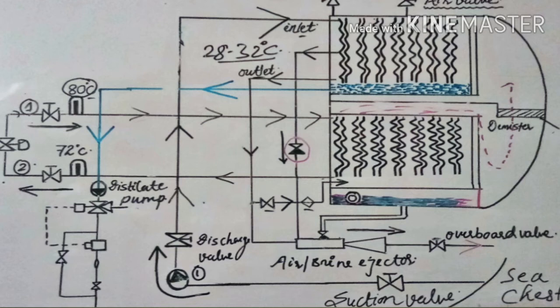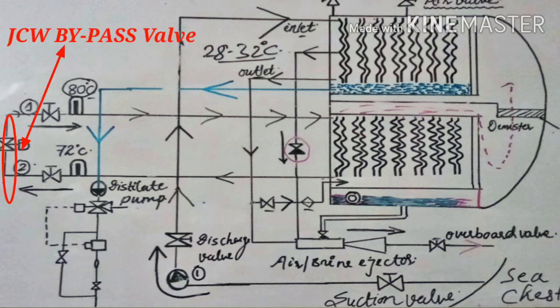Now come to the stopping procedure of fresh water generator. Before that, I would like to introduce one term: the jacket cooling water bypass valve. It regulates the plant capacity — 'plant' here refers to the fresh water generator. The amount of engine cooling water for the evaporator is adjusted by means of the bypass valve until the correct capacity is obtained. In simple words, the amount of opening of the bypass valve is inversely proportional to the production of fresh water through the fresh water generator.